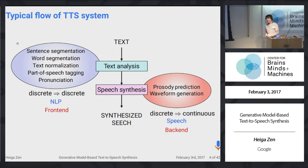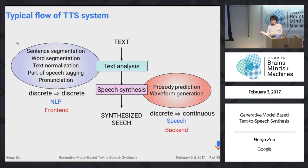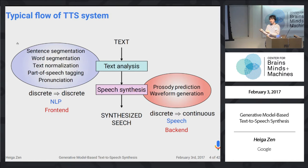The typical text-to-speech synthesis system consists of a text analysis part and a speech synthesis part. The text analysis part includes sentence segmentation, word segmentation, text normalization, part-of-speech tagging, and pronunciation prediction. Most of them perform natural language processing as discrete-to-discrete mapping. The speech synthesis part performs discrete-to-continuous mapping, including prosody prediction and waveform generation. Both are important to achieve high-quality text-to-speech synthesis.